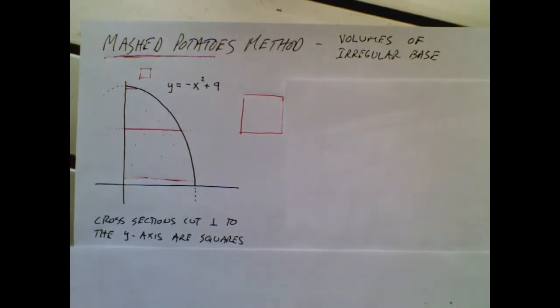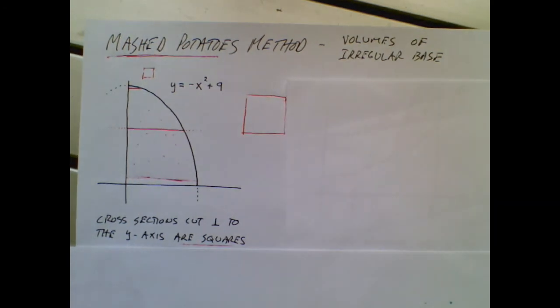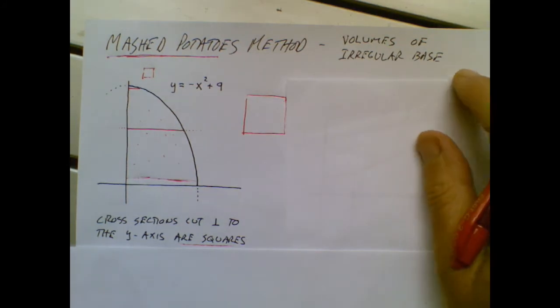So what I basically have is an infinite number of paper thin squares that I've sliced out of here. And I know they're squares only because that's what it said in the original problem. They could give you other figures other than squares.